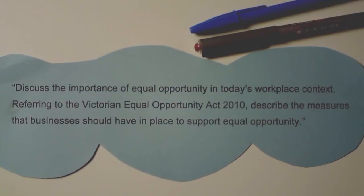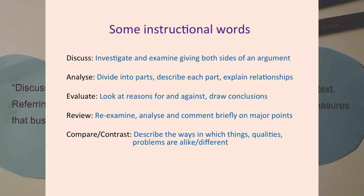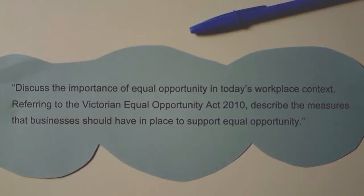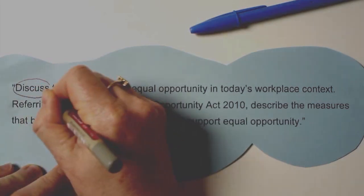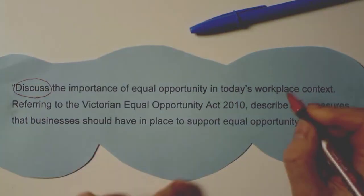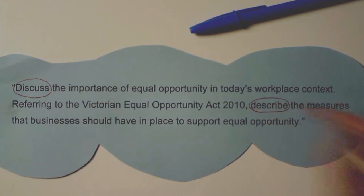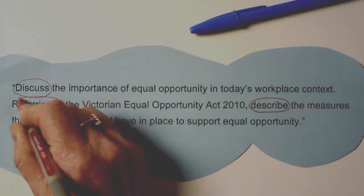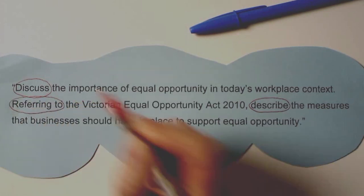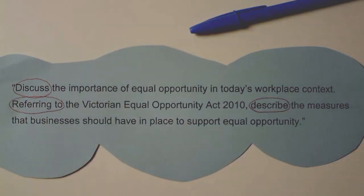Let's look at this topic as an example. First, we need to circle the instructional words — they are the words that tell us how to approach this topic. In this case, the instructional words are 'discuss' and 'describe.' 'Referring to' could also be identified as an instructional word, as you are being instructed to use a particular resource, which is the Victorian Equal Opportunity Act 2010.